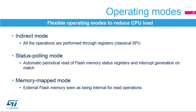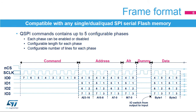1. Indirect mode, where it behaves as a classical SPI interface and all operations are performed through registers. 2. Status polling mode, where the flash status registers are read periodically with interrupt generation. And 3. Memory mapped mode, where the external memory is seen as an internal memory for read operations.